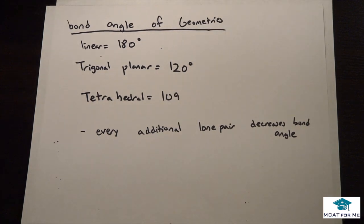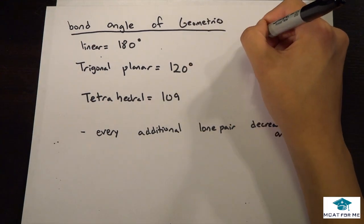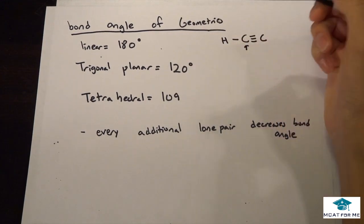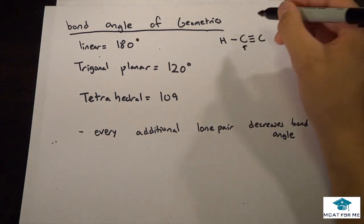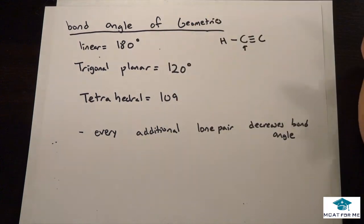Alright, so now what about the bond angle of these geometries? So the bond angle goes like this. So this should be fairly intuitive. So if we had something like this and we're saying that that's linear, right?